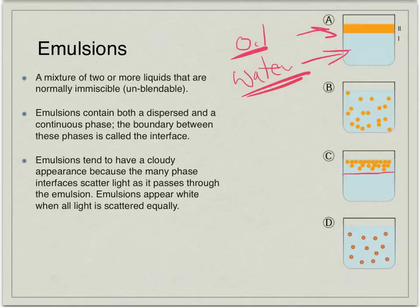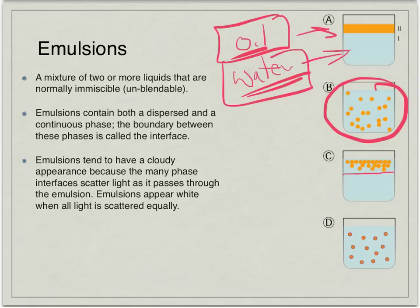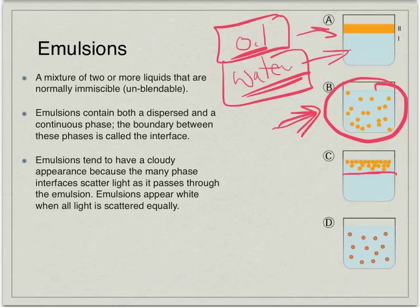But over time, notice what happens — it's going to start settling back out to the top again. A good food example is salad dressing, where we have oil and water. You mix it up and now it's an emulsion where those two liquids — one polar, one non-polar — don't normally mix, but you can physically make them mix. Over time it will settle back out and the oil will move back on top. What an emulsifier does is help keep that emulsion in suspension.